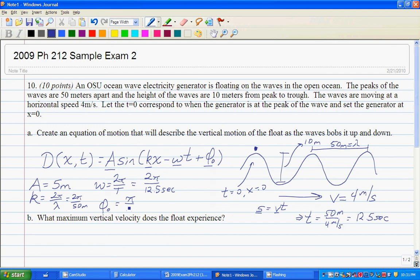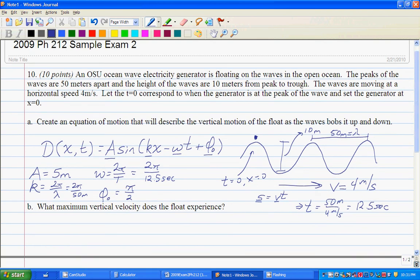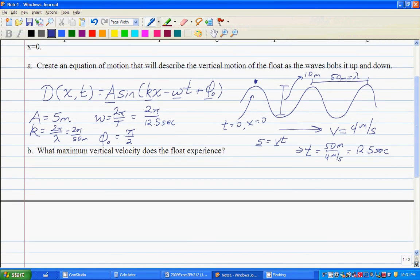Okay, hopefully that one's good. Let's go on to the next one. Next question is: what maximum vertical velocity does the float experience? So again, we have this equation of motion. I'm just going to rewrite it because it's always a good idea to do such things. And remember that that D right here stands for vertical displacement from the midpoint.